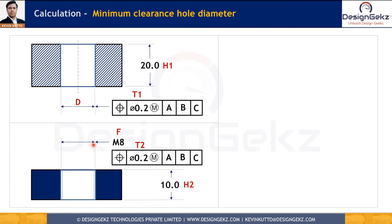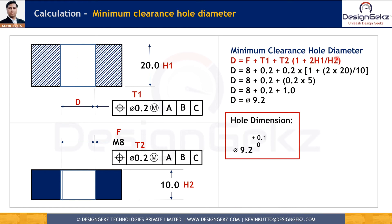Using this nomenclature: D is the minimum clearance diameter we want to calculate; h1 is the height of the upper part; h2 is the height of the lower part; T1 is the tolerance for the upper part; T2 is the tolerance for the lower part; and F is the maximum size of the M8 fastener. The formula gives: D = F + (T1 + T2) × (1 + 2 × h1 / h2). Substituting the values — F = 8 mm, T1 = 0.2, T2 = 0.2 — gives D = 9.2 mm.